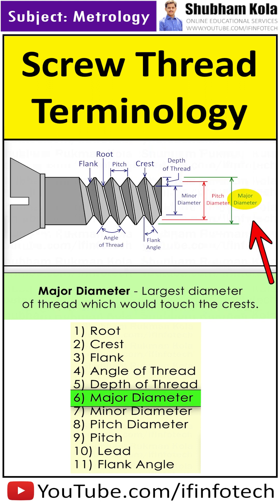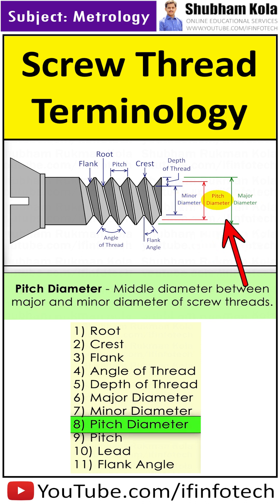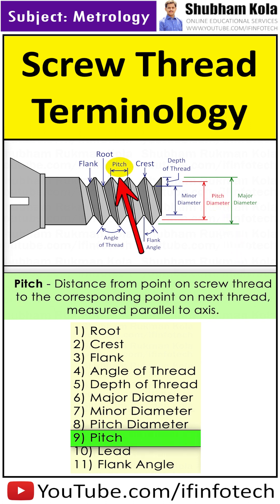The major diameter is the largest diameter of the thread, which would touch the crest. The minor diameter is the smallest diameter of the thread. The pitch diameter is the middle diameter between the major and minor diameter of the screw thread.